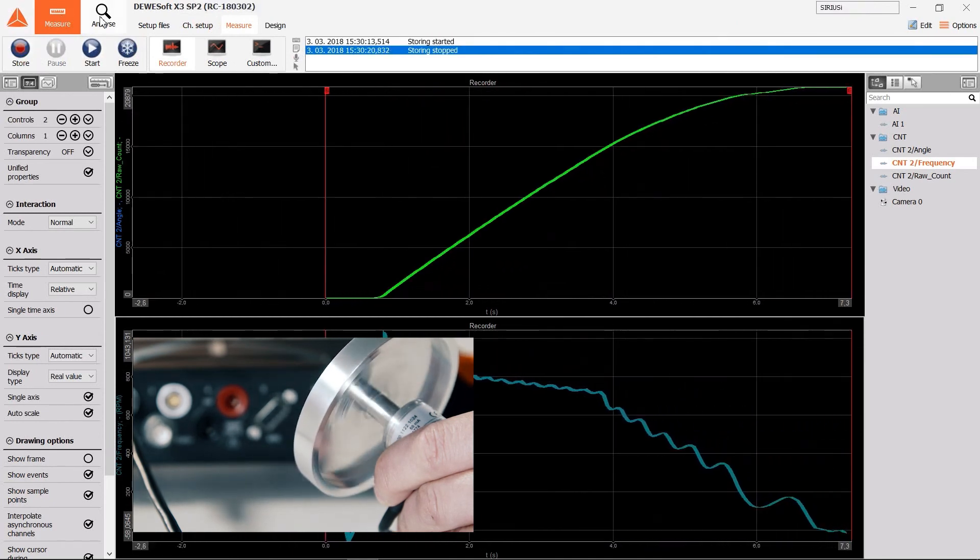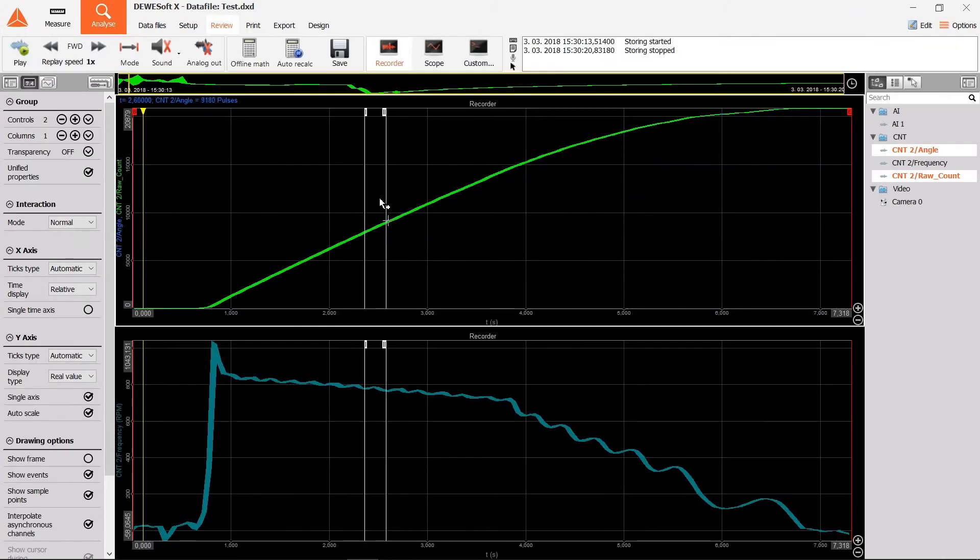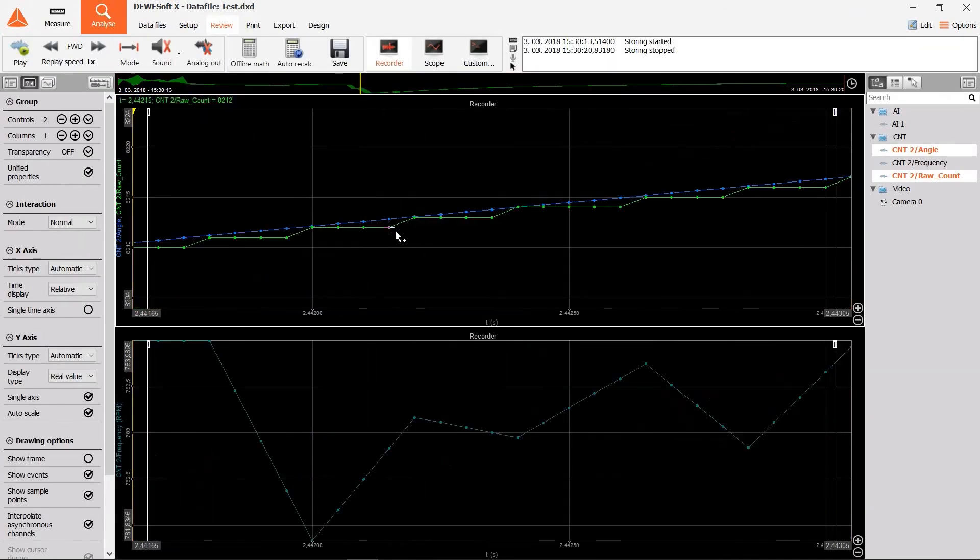In analyze mode, we can zoom in on specific regions and compare the counter and super counter result. The normal counter in green color shows only basic transition counts of the encoder sample, while the super counter result is very smooth, reflecting real angle position at sample points.